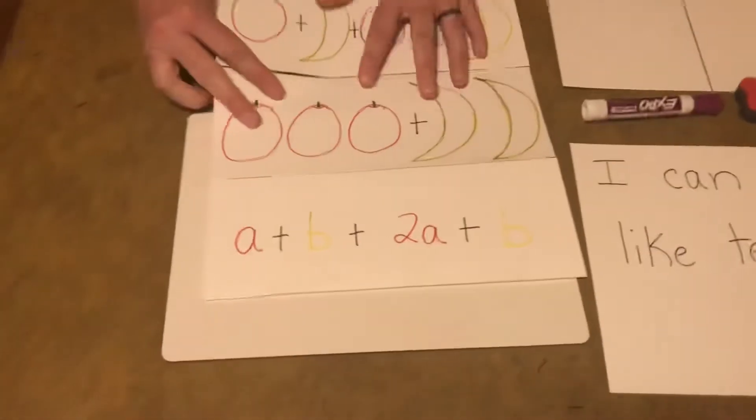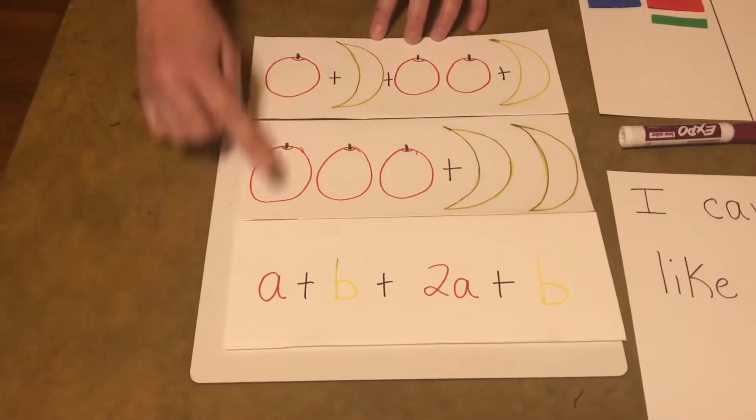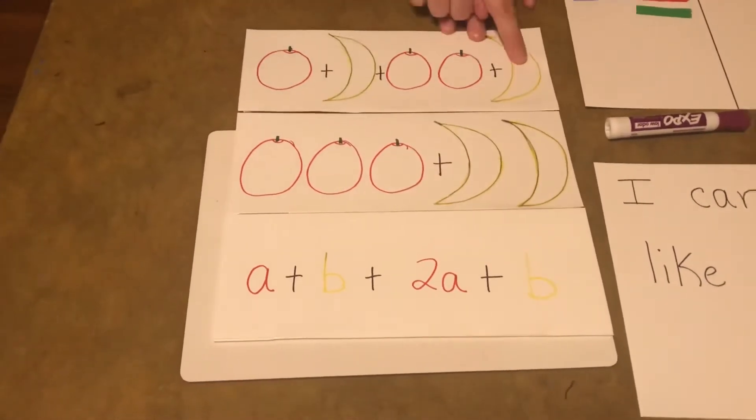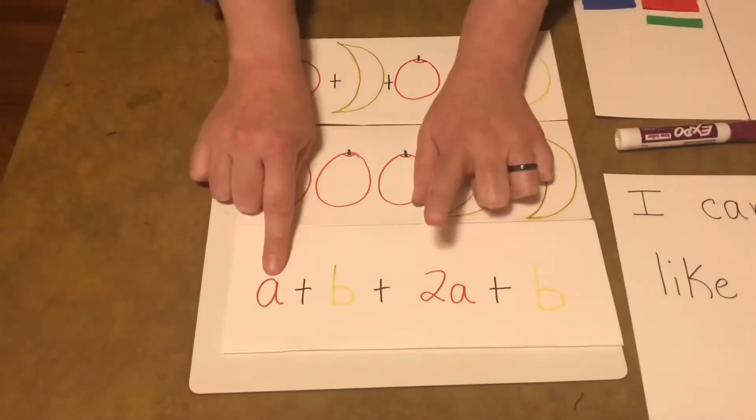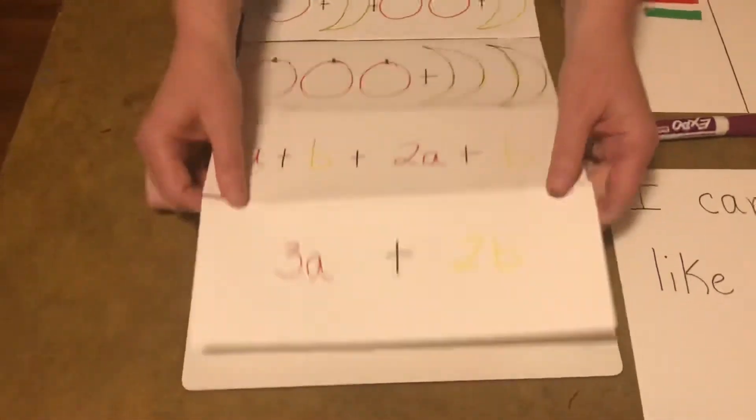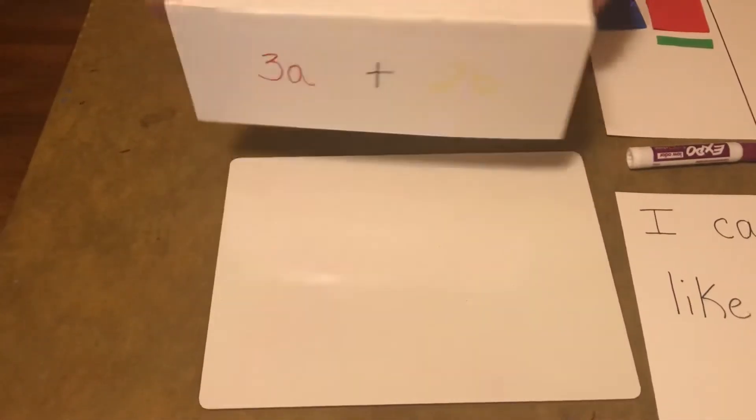And just like we labeled the other one with variables, we could do the same. So if we're coming back at the top, there's our one apple, our A, there's our B. There's 2A plus B. And we could combine the A plus the 2A is 3A, and our B plus B is 2B. Oh, you're just doing great. We got this. Let's keep going.